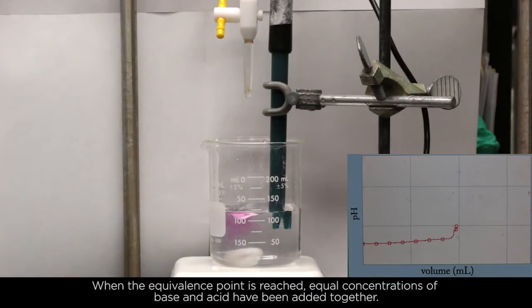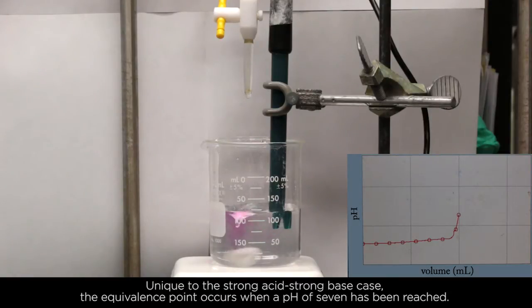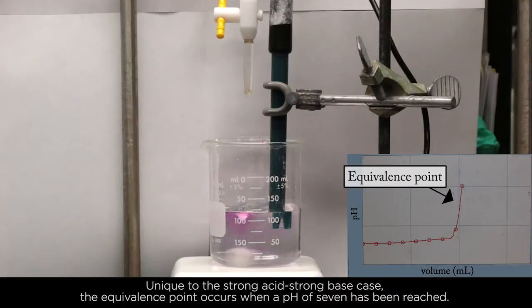When the equivalence point is reached, equal concentrations of base and acid have been added together. Unique to the strong base, strong acid case, the equivalence point occurs when a pH of 7 has been reached.